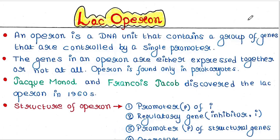So what is an operon? An operon is a DNA unit that contains a group of genes that are controlled by a single promoter. In eukaryotes, a single gene is always under a single promoter, but in prokaryotes the principle is a little bit different. In prokaryotes, many genes can be under a single promoter, and this is called an operon.